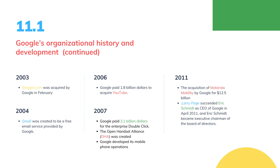Google obtained access to DoubleClick's enterprise in visual design for online advertisements, as well as its well-established customer base. The Open Handset Alliance, or OHA, was created at the end of 2007 with the goal of developing open standards for mobile devices, particularly Android, an open-source mobile phone platform. Google developed its mobile phone operations and was able to integrate its existing offerings with the emerging mobile market, resulting in the Android market offering a diverse range of mobile applications.